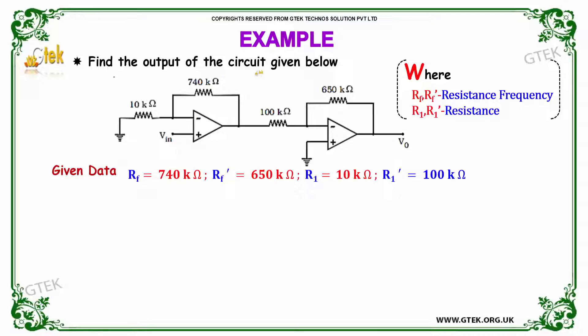Let's look into the output of the circuit given below. This is the circuit. Rf is equal to the feedback resistor is equal to 740 kOhm. Rf dash is equal to 640 kOhm. The R1 value is 10 kOhm and R1 dash value is 100 kOhm. In that case, we need to identify what is the output.